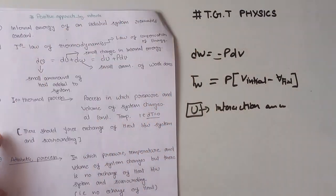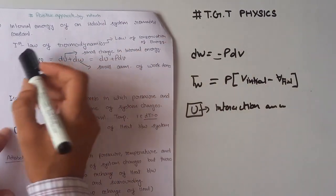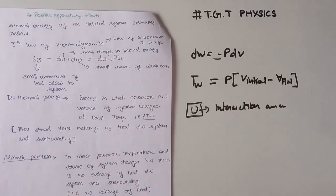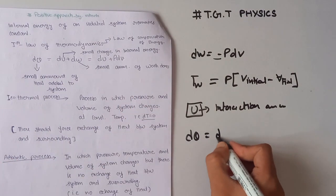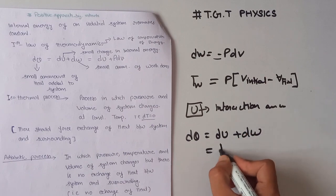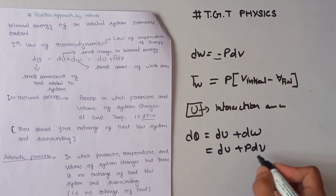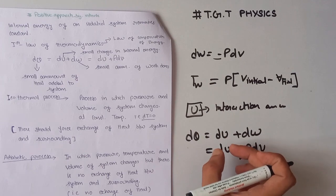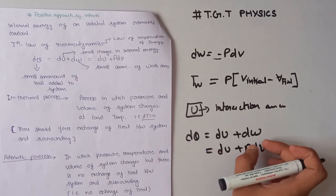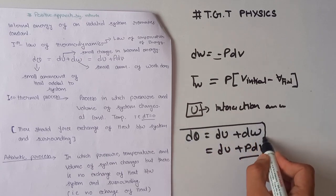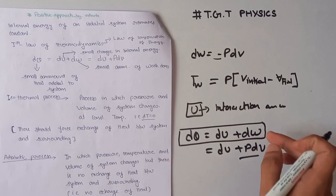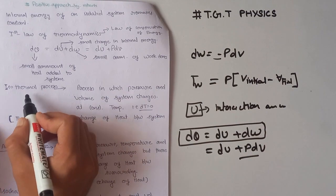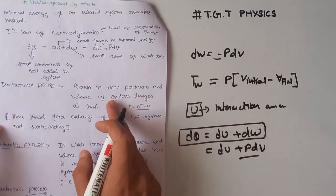The internal energy of an isolated system remains constant. What is the first law of thermodynamics? The first law of thermodynamics is also known as the law of conservation of energy, and it is given by dQ = dU + dW, which equals dU + PdV. Here dQ is the small amount of heat added, dU is the small change in internal energy, and dW is the small amount of work done.